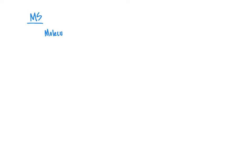We'll begin by reviewing the fundamentals of mass spectrometry. In mass spectrometry, you start with a molecule, such as a novel drug candidate, a compound you've synthesized, or a compound that you have isolated from the human body. That molecule, using the instrument mass spectrometer, is going to be ionized.